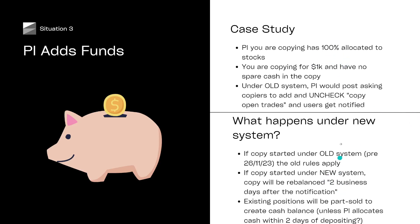What I don't fully understand is what happens if the PI then spends some of that $200 and allocates it to their existing positions — will there still be a rebalance? I presume yes, but I presume the rebalance will be less drastic because the system won't be trying to create cash, it will just be trying to rebalance the stock part. So to be honest, I'm a little bit confused about the finer details of that one. The main thing to take is: if the copy started under the old system, old rules apply apart from copy open trades which doesn't exist anymore; and if it started under the new system, you've got a two business days period before rebalancing kicks in.